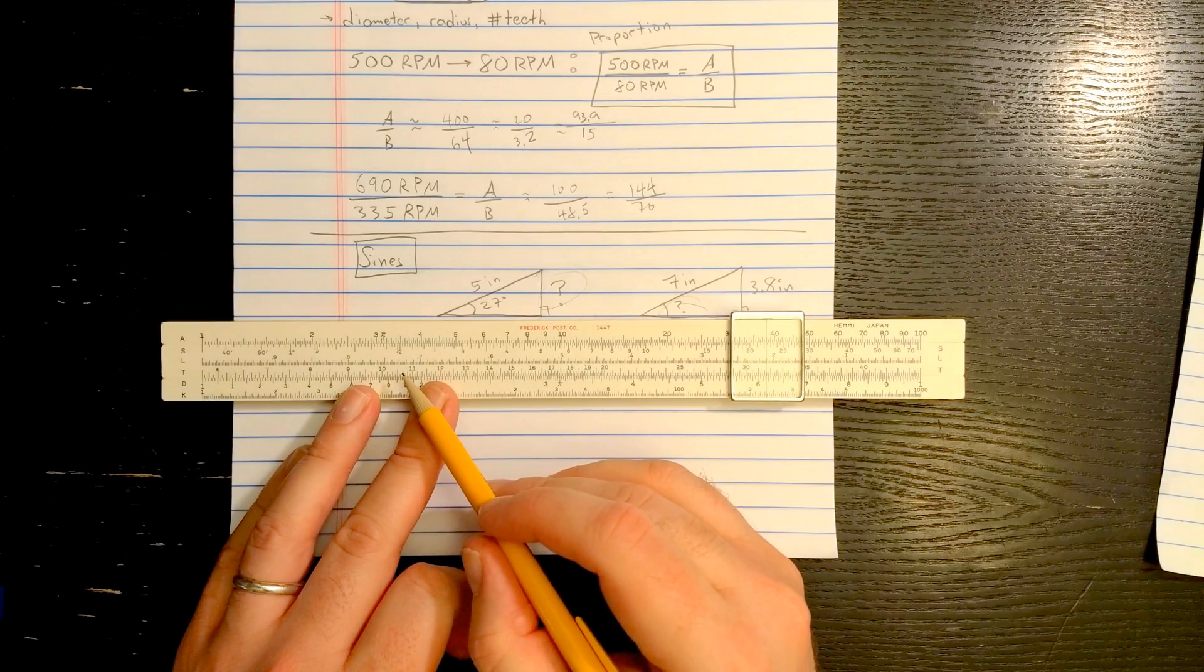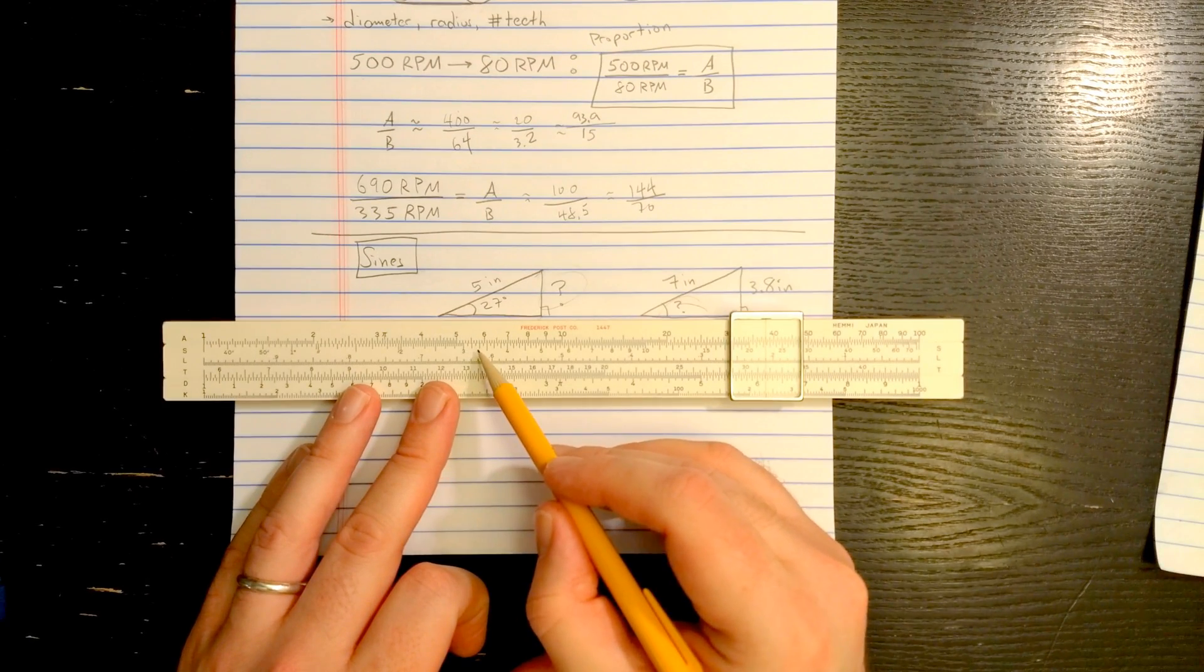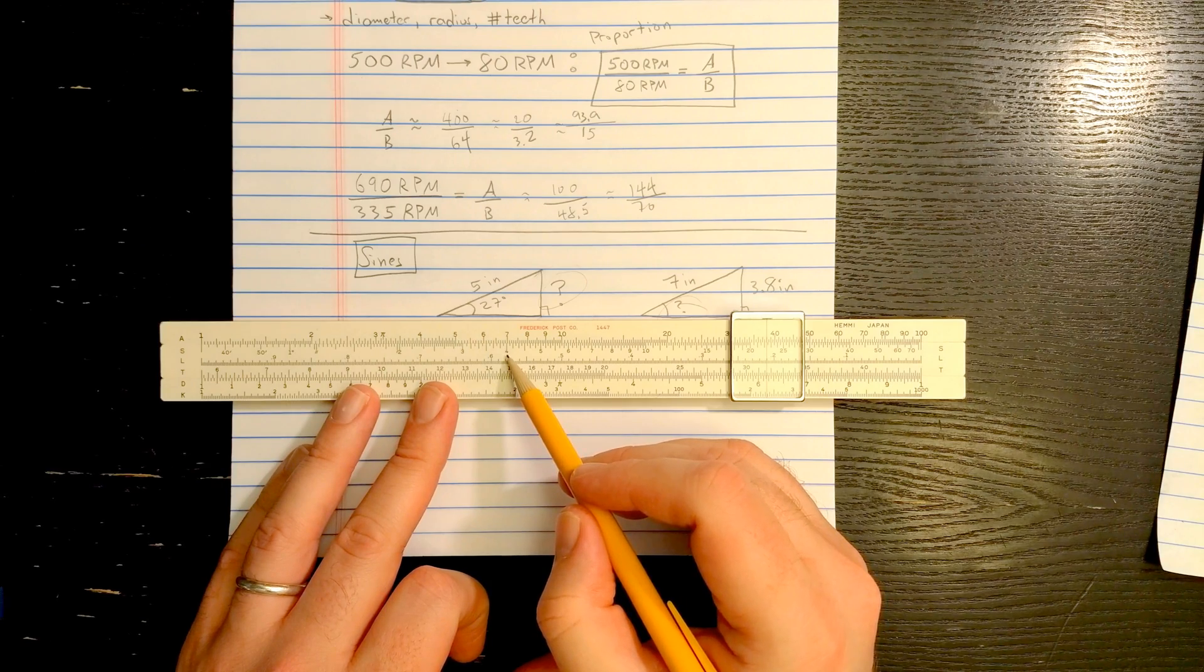So you see if you look here between say 3 degrees and 4 degrees, you've got 3 degrees, 10 minutes, 20 minutes, 30 minutes, 40 minutes, 50 minutes, and then 60 minutes or 4 degrees.